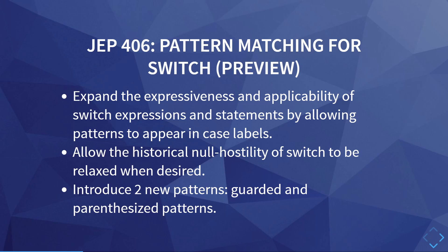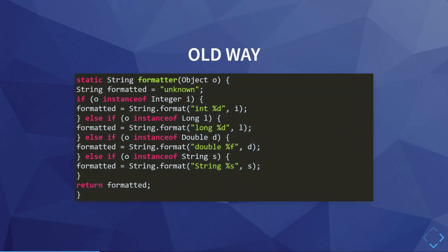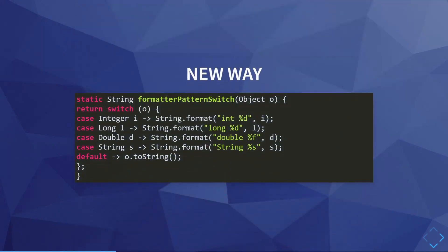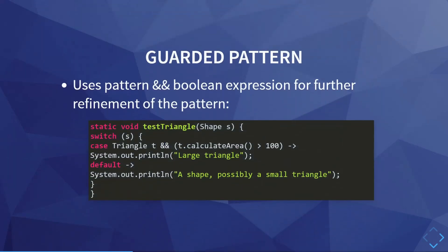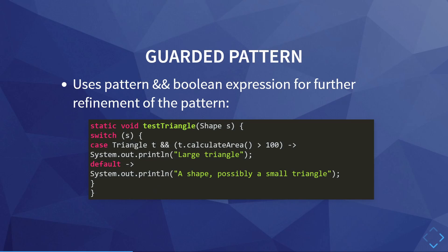So what does this look like? Previously, if you wanted to check for multiple patterns on an object, you could write a string of if-else statements like this. By adding patterns to the switch statement, you could simplify the code like this. Here, integer i is the pattern, and if the pattern is met — if the object is an integer — then i is also the reference to the object. It's possible to add further refinement with a guarded pattern, where you add a boolean expression after two ampersands.